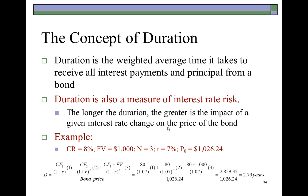Bond B would react more adversely because its duration is longer at 2.5 years. Even though the price of bond A would fall as interest rates go up, as well as the price of bond B, bond B's value would fall more drastically because of its longer duration. In this example, we calculated the duration of this three-year bond to be 2.79 years. The duration of a bond will always be less than its maturity if it is a coupon-paying bond — the longest duration a bond can have would be its maturity.